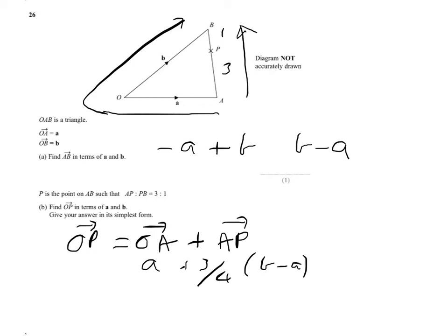So A plus 3 quarters of B minus A. Now it says in its simplest form, so we're going to need to open out the brackets and simplify. So we're going to get A plus 3 quarters of B minus 3 quarters of A.